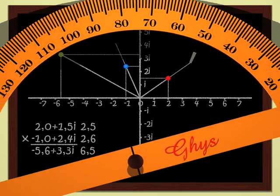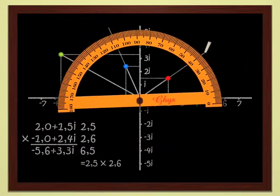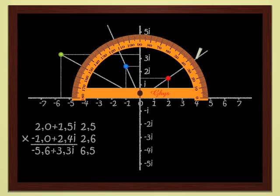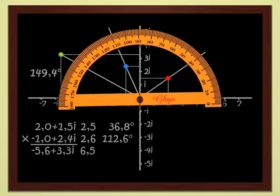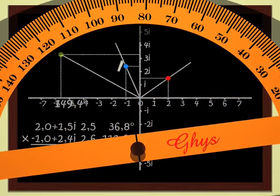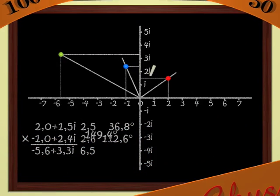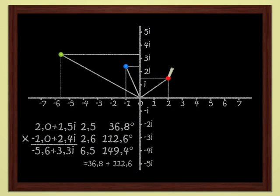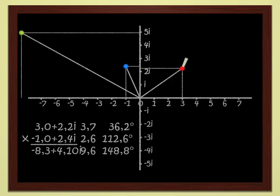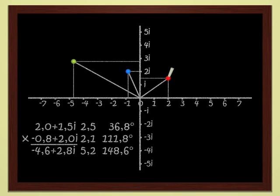The argument of a complex number is measured by the angle between the abscissa axis and the straight line joining the origin to the point. Here, for instance, the argument of the red complex number is 36.8 degrees. The argument of the blue point is 112.6 degrees. And for the product, the green point, we get 149.4 degrees. That is, the sum of the arguments of the two numbers. When we multiply two complex numbers, moduli are multiplied and arguments are added.